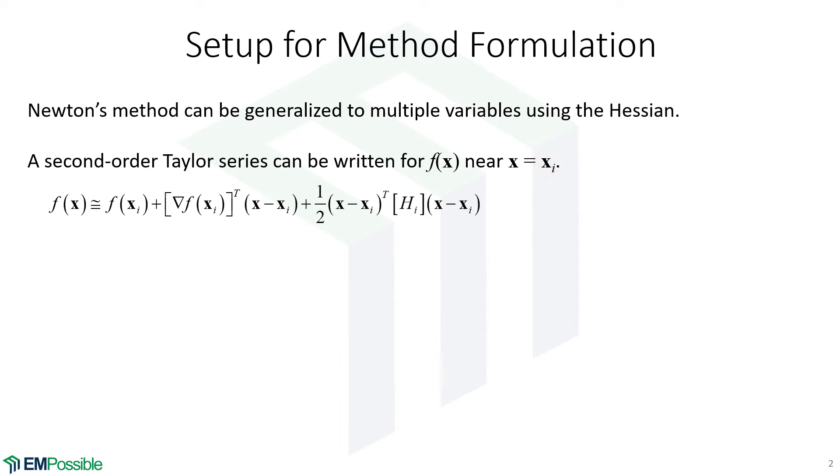This is a column vector, so that is an actual position. So here's how we write that Taylor series for a multivariable function. And here is that Hessian.